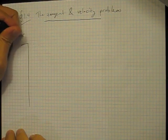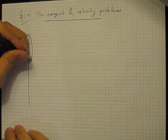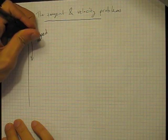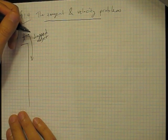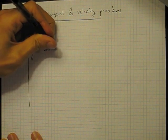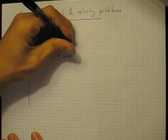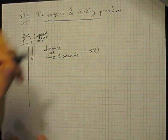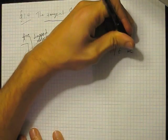So tangent and velocity problems. It starts off with the following question. Suppose that you are somewhere, this is you, and you have an object, a ball, whatever. And you're going to throw it down or drop it. So dropped object. And now it's well known that the distance that the object has fallen at time t seconds is given by, so we usually denote it with the letter s, it's given by 4.9 times the time squared, and this is meters.